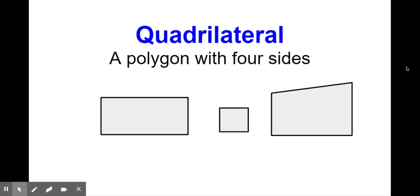So first thing we're going to talk about are quadrilaterals. Everyone say quadrilaterals. A quadrilateral is a polygon with four sides. Remember that a polygon is a closed figure — three sides or more. But a quadrilateral: if we look at this word, that 'quad' — quad means four, like a four-wheeler. They call them quads. Quad means four.